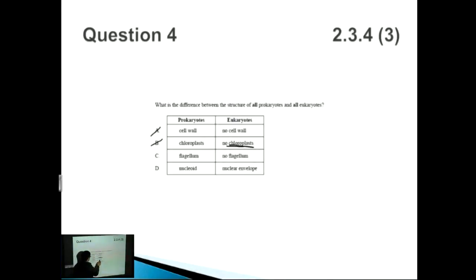C. Flagellum as well as no flagellum. So prokaryotes, yes, they can have flagellum. That's fine. But eukaryotes sometimes can have flagellum as well, not all the time. So this one is wrong. So that really leaves us with D. Prokaryotes having a nucleoid, correct. Whereas eukaryotes, they have a nuclear envelope. That is also correct as well.